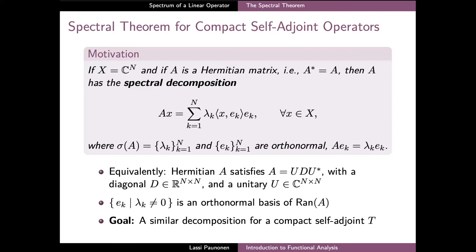As background motivation, we recall that on the finite-dimensional Euclidean space C^n, a Hermitian matrix has a spectral decomposition which allows the matrix A to be expressed completely in terms of its eigenvalues and orthonormal eigenvectors. The decomposition shows that the image Ax of any vector x is a linear combination of the eigenvectors of A, and the coefficients are given by inner products between x and the eigenvector, times the corresponding eigenvalue λ_k.